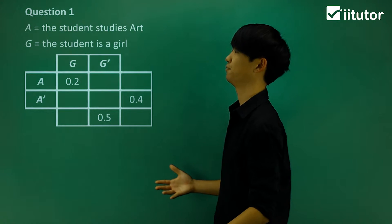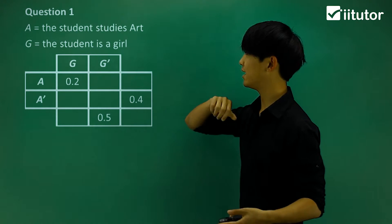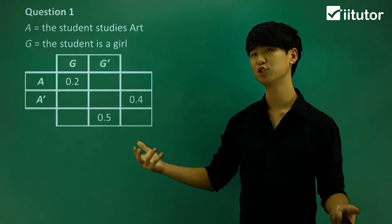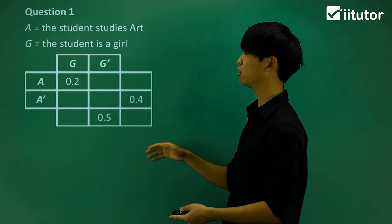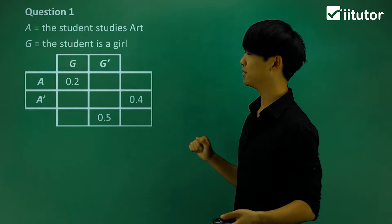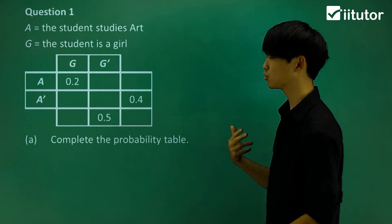Looking at the first one, we've got event A and G. Event A is the event where the student studies art, and G is the event where the student is a girl. I've got some of the probability table filled out, but I'm going to try and have to fill it all out.